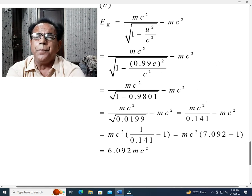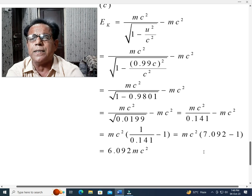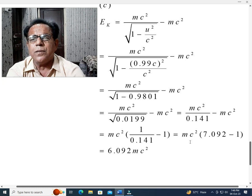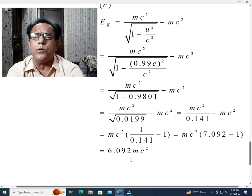And hence, just putting the value, taking square of this, and then subtracting from 1, and then taking square root, and then taking mc squared common, and then dividing 1 by this, and then subtracting 1 from it. Here, kinetic energy Ek becomes finally equal to 6.092 mc squared.